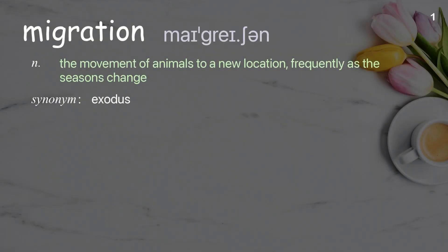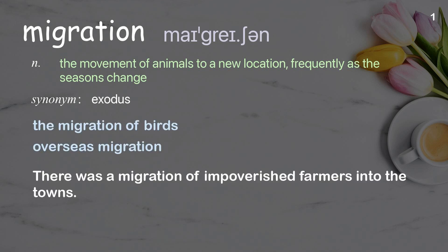Migration: the movement of animals to a new location, frequently as the seasons change. Examples: the migration of birds overseas; there was a migration of impoverished farmers into the towns.